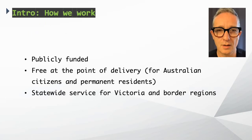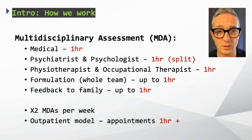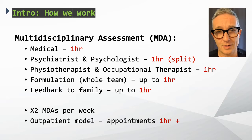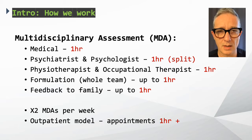I wanted to tell you briefly how the clinic works. It's a publicly funded clinic — free at the point of delivery, no co-pay whatsoever — open to any child in the state of Victoria and some border regions. The mainstay is a multidisciplinary assessment held twice a week. They see the doctor for an hour, then the psychiatrist and psychologist concurrently for an hour (psychiatrist sees the parent, psychologist sees the child), then the occupational therapist and physiotherapist for an hour. After a break, we put our heads together and formulate all the assessment findings, and then they come back to the doctors for up to an hour to receive feedback, our formulation, and any plan of care.